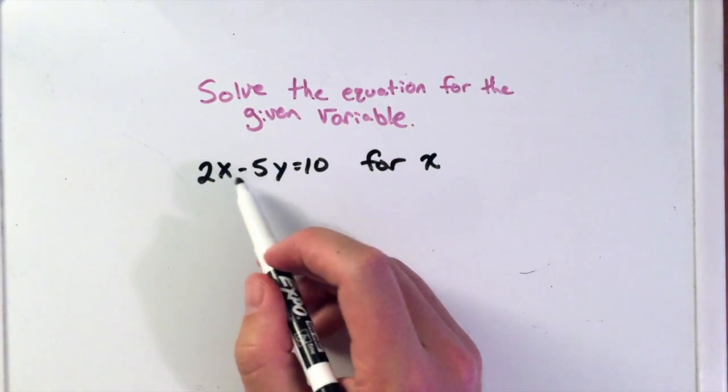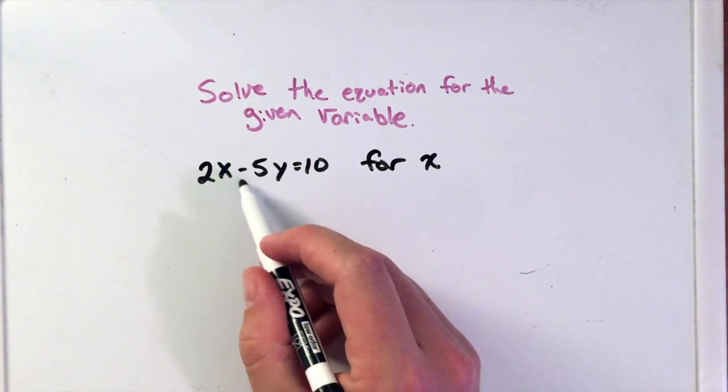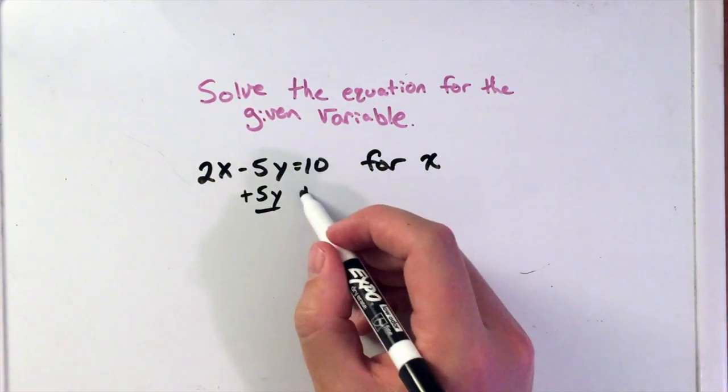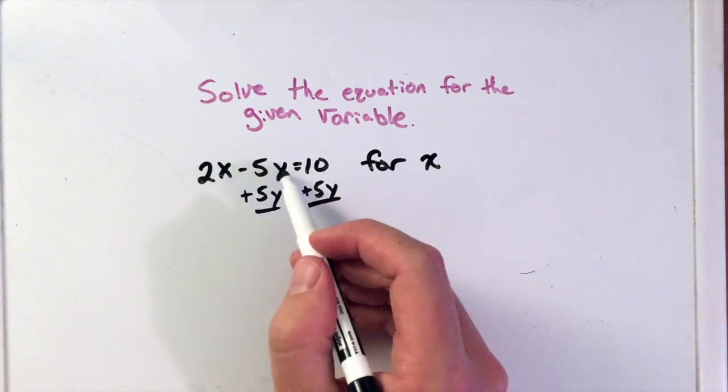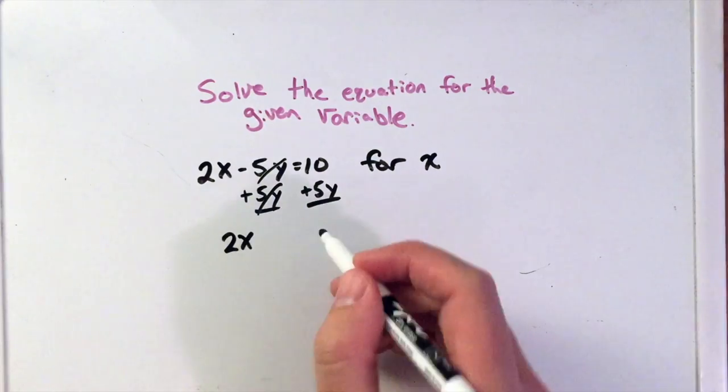So what I like to do is the opposite here. We have subtraction connecting these two parts of the equation. Since we have subtraction, I'm going to add 5y to both sides. In doing so, the negative 5y or minus 5y plus 5y, they cancel out. I am left with 2x equals.